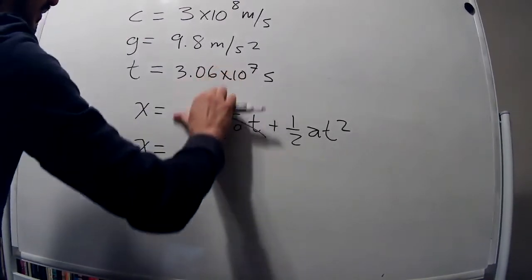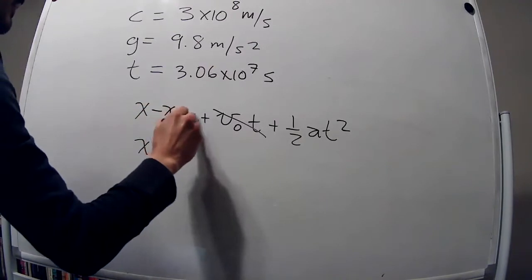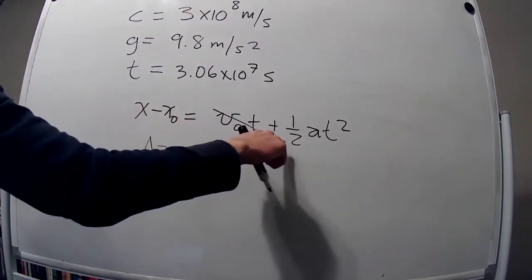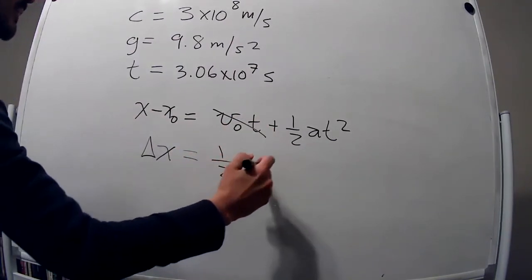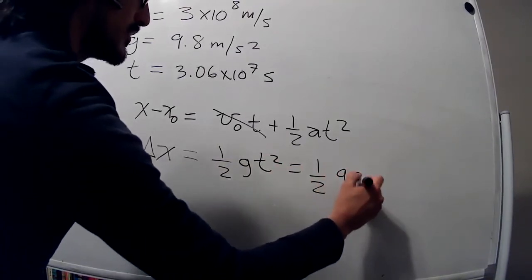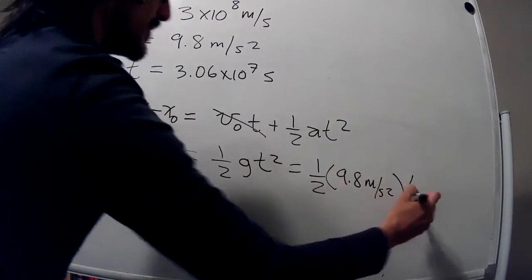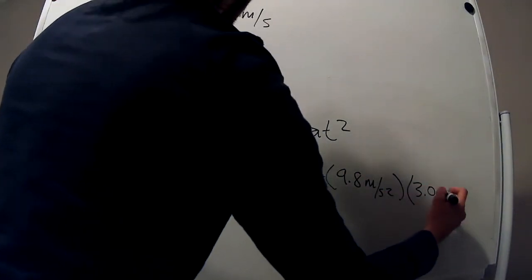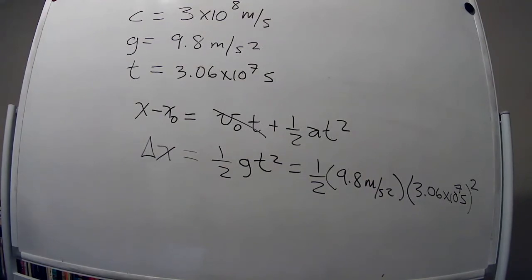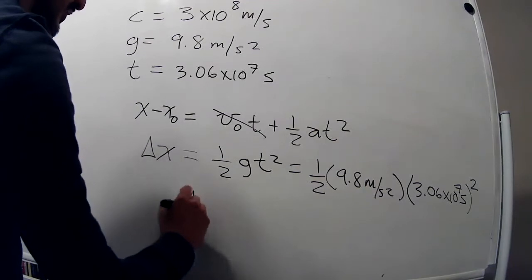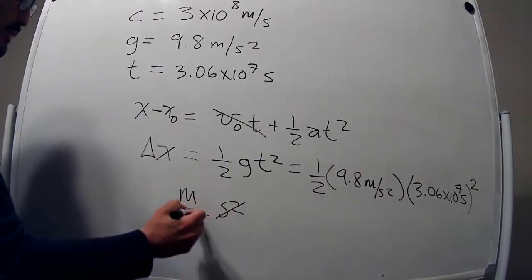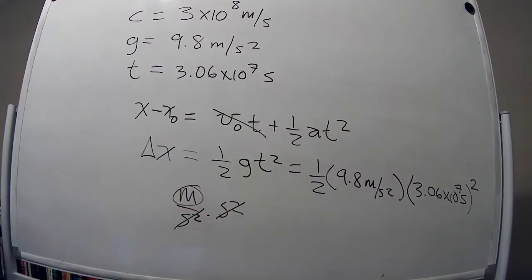Rearranging, Δx = ½ g t². Substituting: ½ × 9.8 m/s² × (3.06×10⁷ s)². Checking units: meters/second² multiplied by seconds² cancels to give meters — exactly what we want for a displacement.